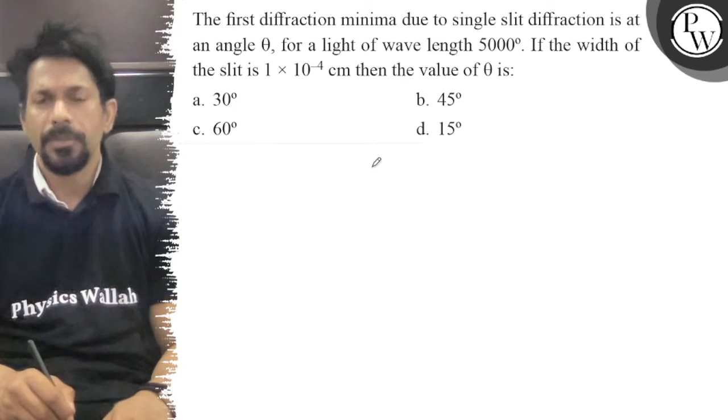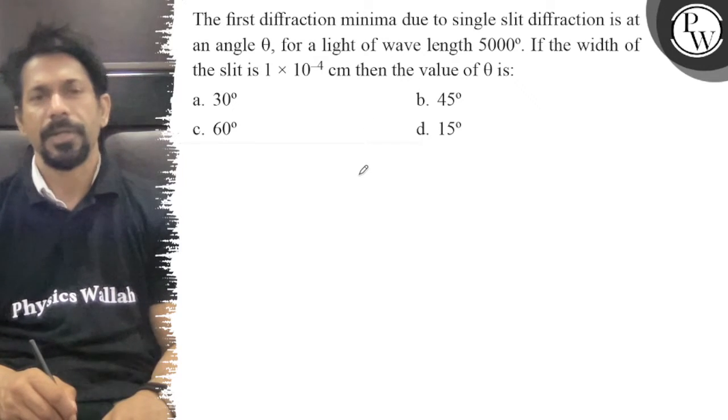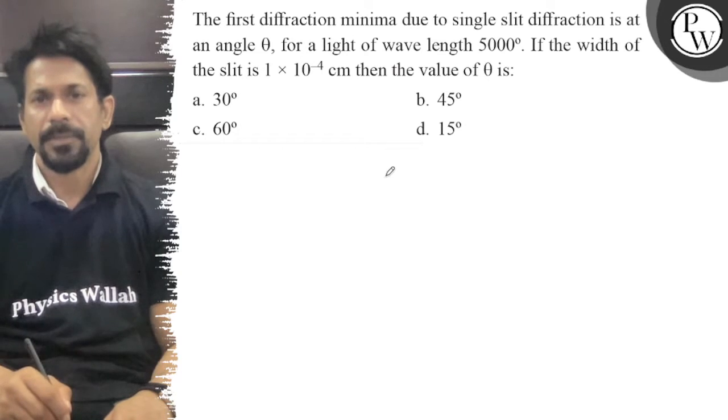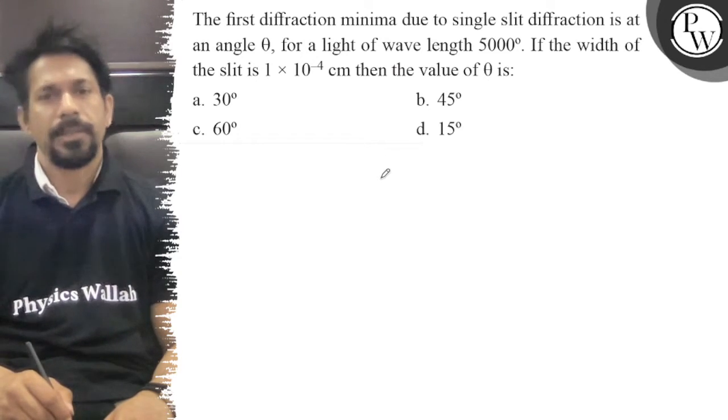The first diffraction minima due to single slit diffraction is at angle θ for light of wavelength 5000 Angstroms. If the width of the slit is 1×10^-4 cm, then the value of θ is: